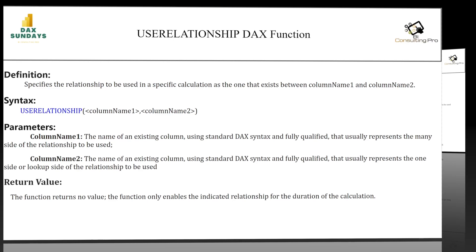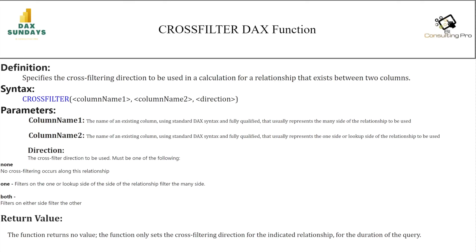Now let's discuss CROSSFILTER. The CROSSFILTER DAX function specifies the cross-filtering direction to be used in a calculation for a relationship that exists between two columns. CROSSFILTER replaces USERELATIONSHIP and adds a third argument that provides the ability to modify the direction of filter propagation in a relationship. You can use the arguments: none, one way, or both — where none means no cross-filtering occurs, one means filters on the one or lookup side filter the many side, and both means filters on either side filter the other side.